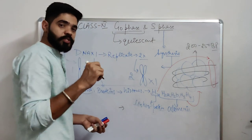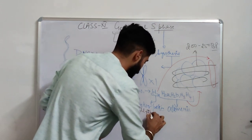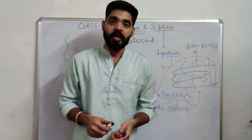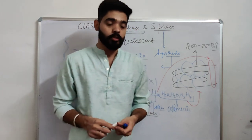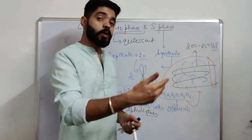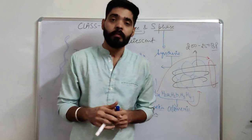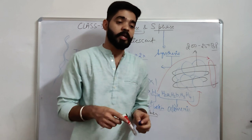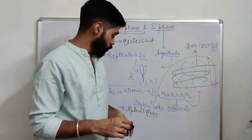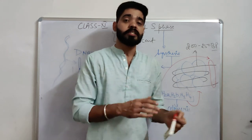Other proteins being produced include those responsible for spindle fiber formation — specifically actin proteins. When the G2 phase is about to complete, the cell starts to assemble the spindle fiber, and therefore the spindle fiber proteins must be produced and available to keep the spindle fiber intact.